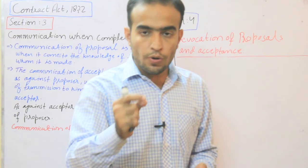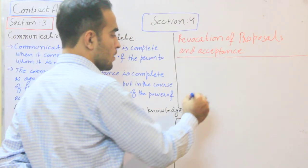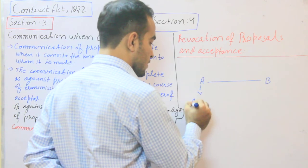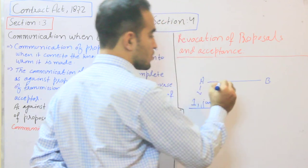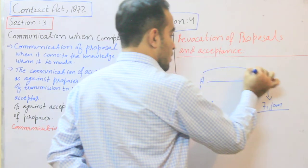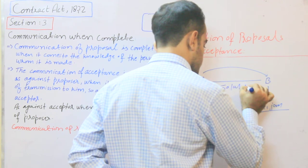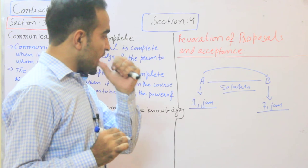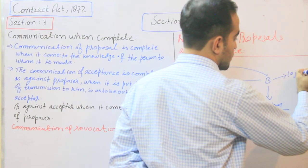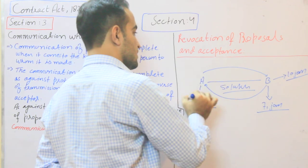فرض کیجئے میں آپ کو ایک example دوں گا — جب ہم وہ example سمجھ جائیں گے تو یہ دونوں sections حرام سے سمجھ جائیں گے۔ فرض کیجئے کہ A اپنا گھر B کو بیچنا چاہتا ہے۔ A نے 1st January کو letter post کیا، جو B نے 7 January کو receive کیا۔ Letter میں کہا گیا تھا کہ A اپنا گھر 50 لاکھ میں بیچنا چاہتا ہے۔